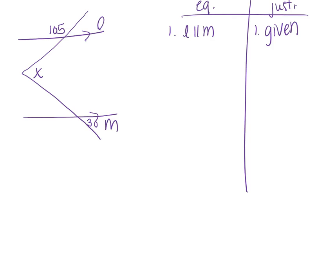I decided to make a video with some extra examples of little mini proofs that we've done throughout our unit 2. What you have are two parallel lines, L and M, and I've got some transversals drawn in, and I want to find the measure of angle X and justify each of my steps. This really relates to what we did on day 6 where we included what are called auxiliary lines, which are just extra lines that I can draw in my diagram to create more angles.